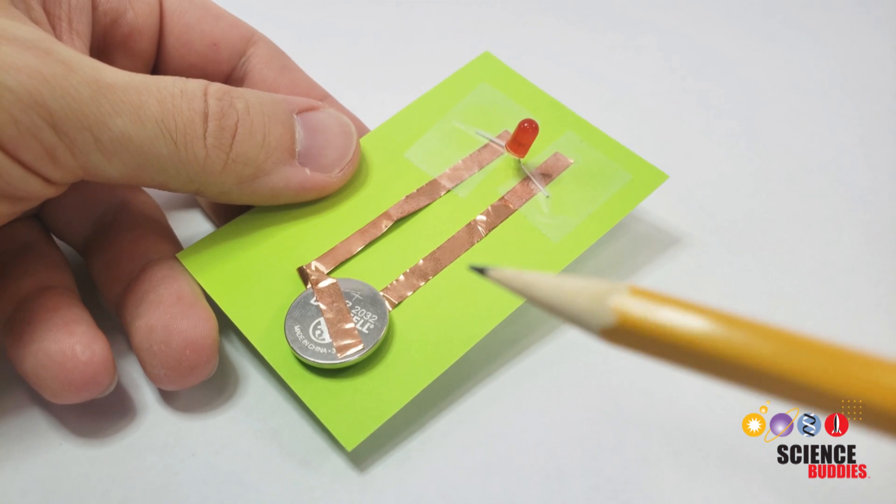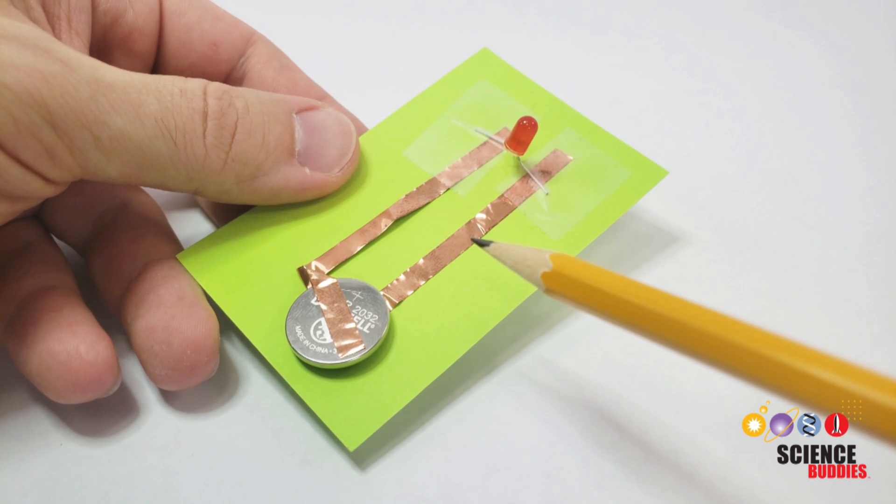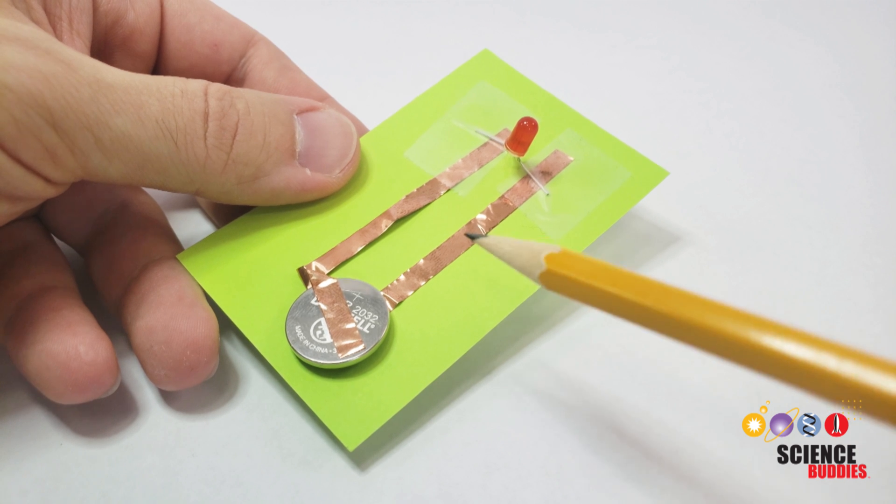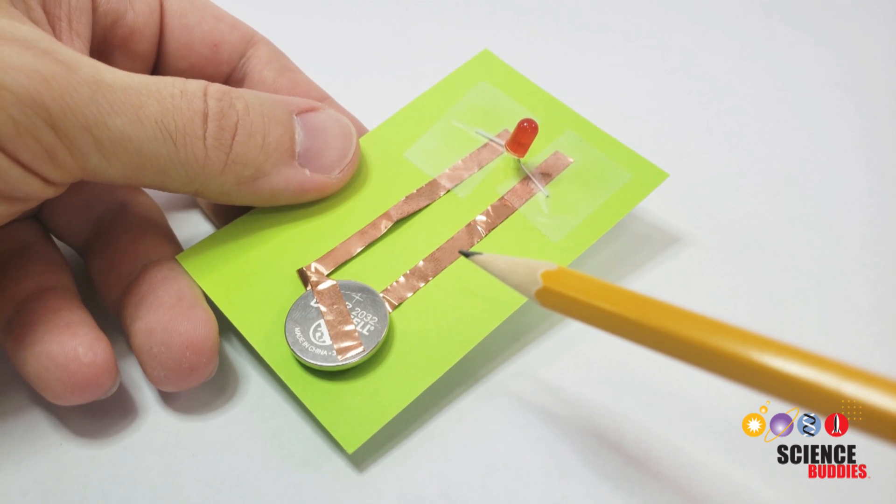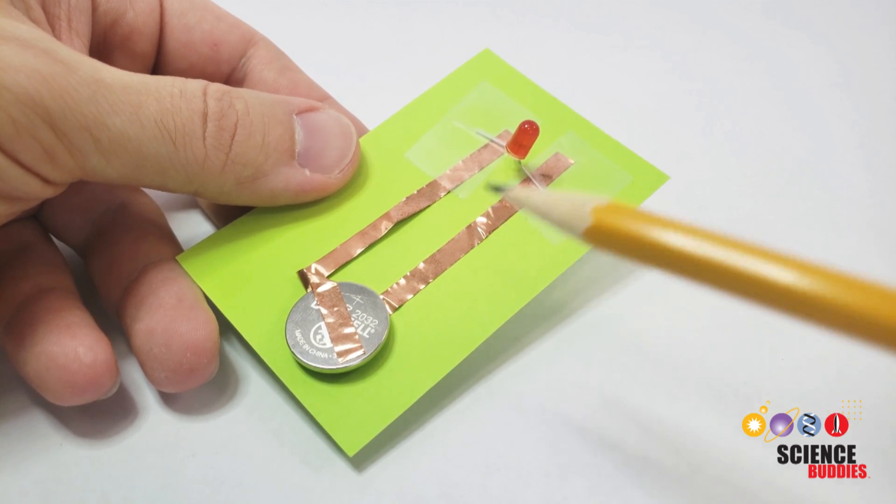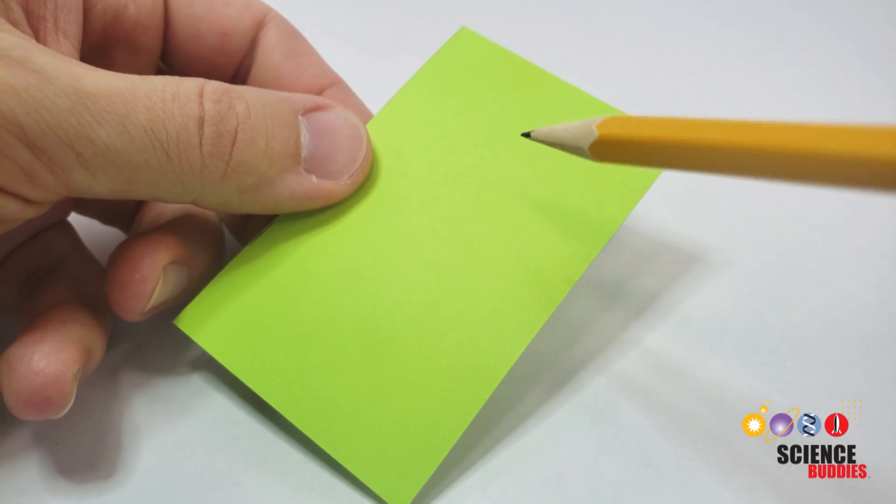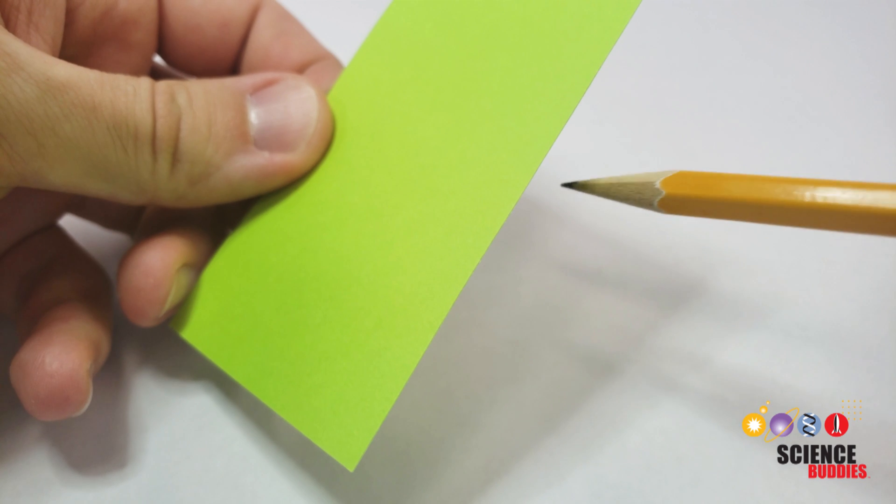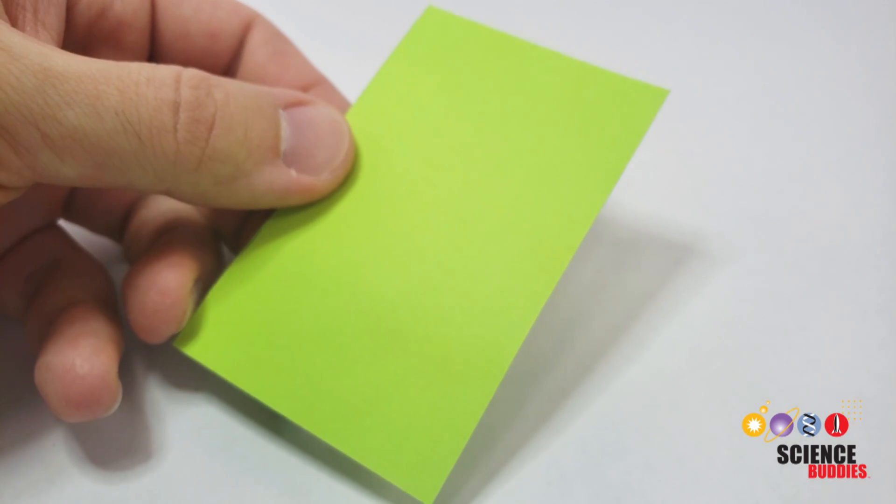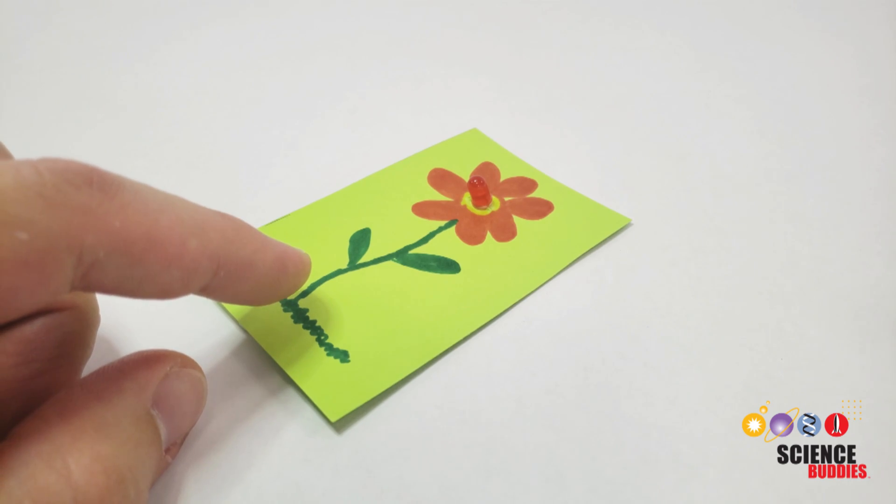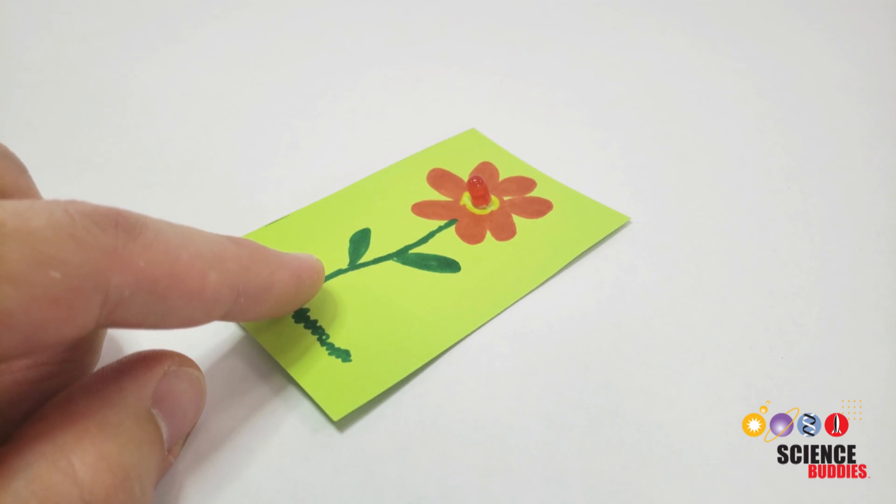Now for an art project, you'll have to decide whether you want the copper tape to be visible. You could integrate it and make it part of your drawing or painting. If you don't want it to be visible, you can flip the paper over and poke holes for the legs of the LED so the circuit is on the back side of your paper. You can see I've done that here such that the center of my expertly drawn flower lights up when I press on the base of the stem.